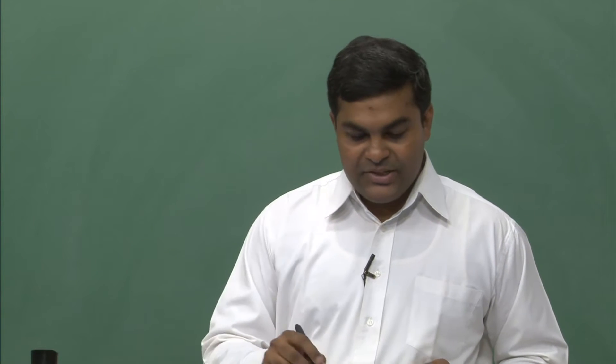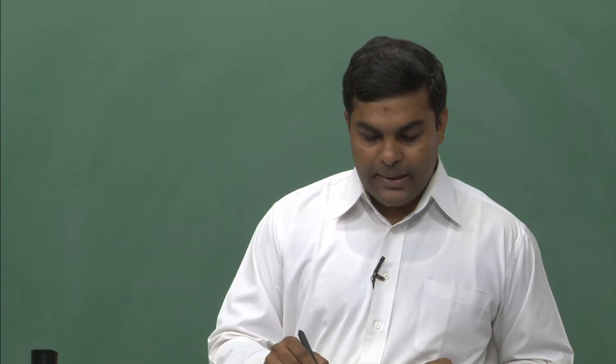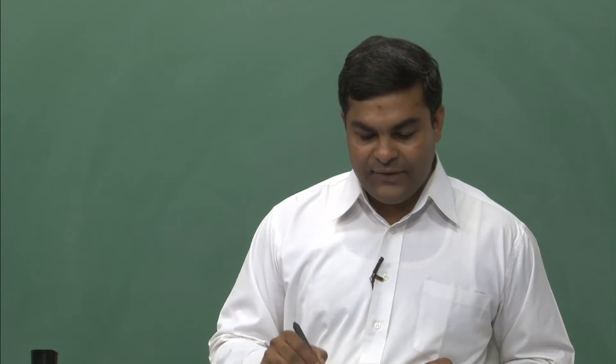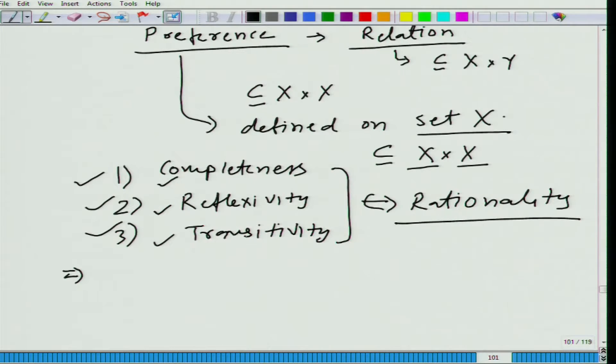But in economics, what we are saying is that Mr. X is rational if his preferences satisfy completeness, reflexivity, and transitivity properties. So are these two notions of rationality the same thing, or are they different?